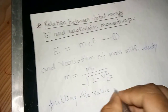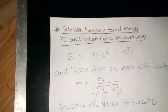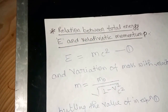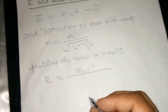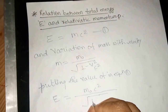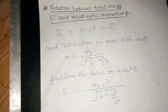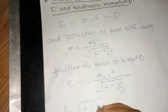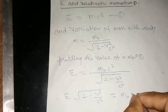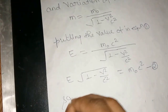Putting the value of m in equation one: E equal to m-naught c square divided by under root 1 minus v square by c square. Now multiplying both sides, E times under root 1 minus v square by c square equal to m-naught c square. Let this be equation 2.